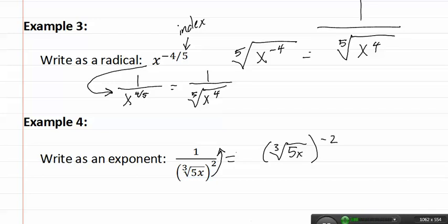Because remember, if you move something to the numerator, it becomes a negative exponent. Now that we have this, remember that the index actually comes over here to become our denominator, giving us five x to the negative two-thirds. This is our final answer.